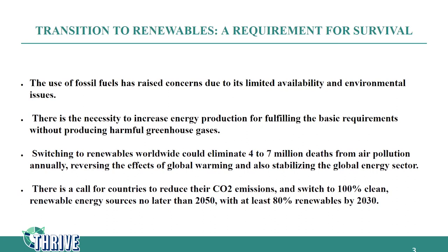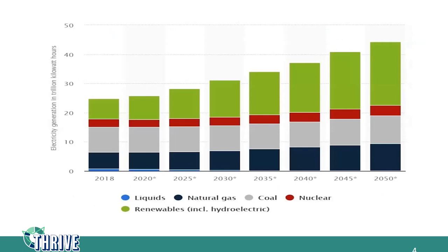Moving on to the next slide, we have a bar chart that represents a forecast for energy consumption in the world. If we look at the data presented, there is an increase in the use of renewables, as seen in countries like Germany, the U.S., Uruguay, and Brazil. This shift to renewables is proven to increase in the future, as shown in the bar chart where the green-colored portion indicates the growth in the use of renewables.